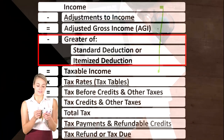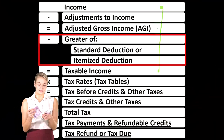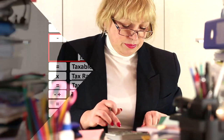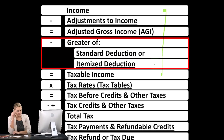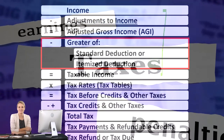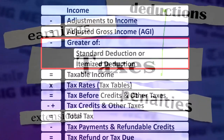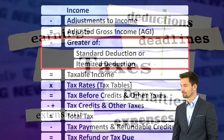Adjusted gross income is a very important subtotal because that's the number often used to think about phase-outs as income goes up — we can phase out deductions and credits based on AGI. Then we have what might be called the below-the-line deductions, which is either the standard deduction or the itemized deduction. We only take the itemized deduction if it is greater than the standard deduction.